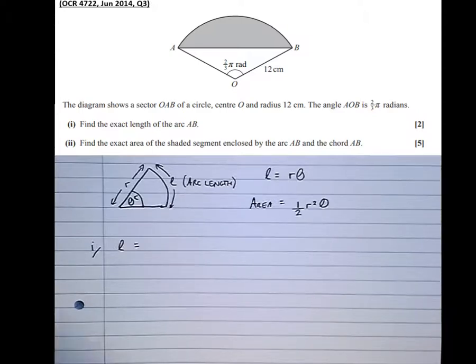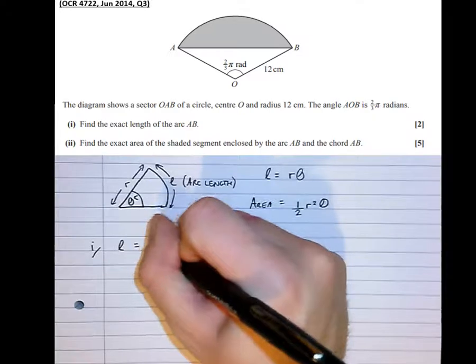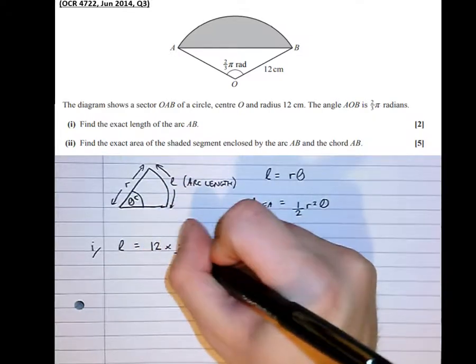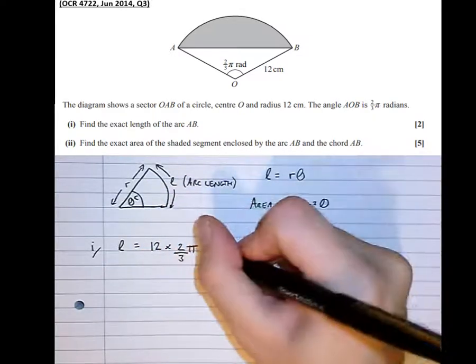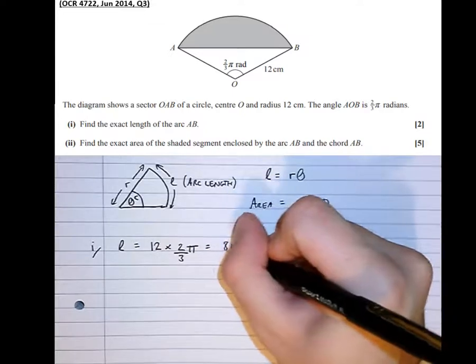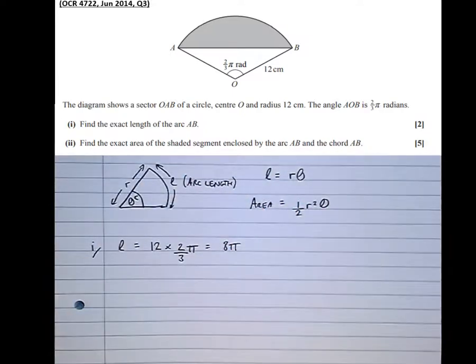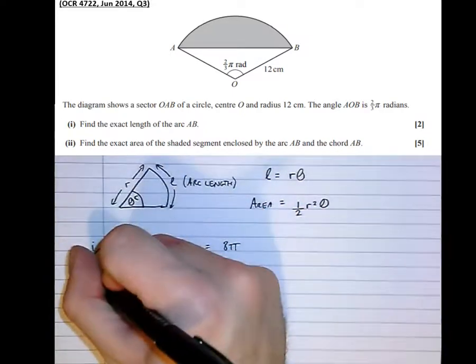So applying this formula, r theta, 12 times the angle, 2 thirds pi, which turns out to be 8 pi. So that's that part of the question done.